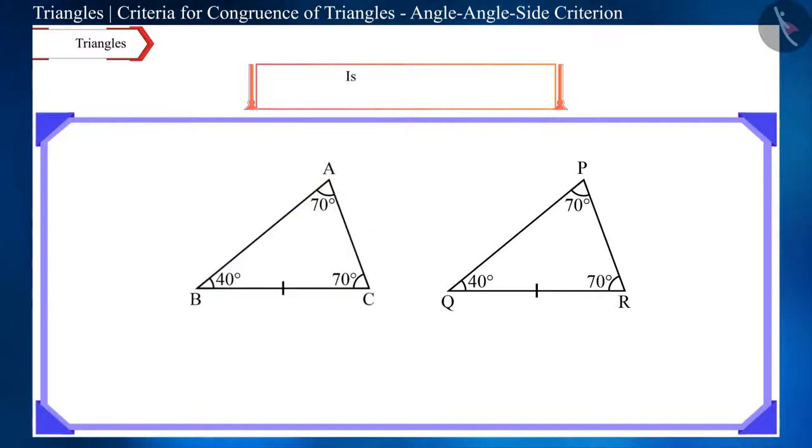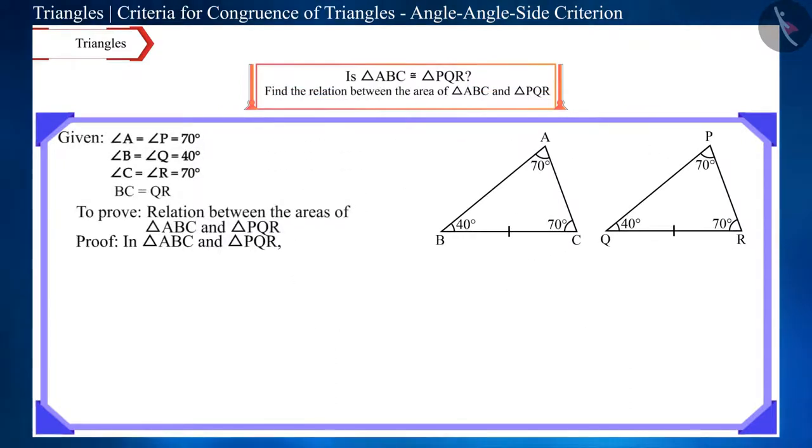State whether triangle ABC and triangle PQR are congruent triangles? If yes, then can we find any relation between their areas? According to the figure, two pairs of their angles and one pair of their corresponding sides are equal.